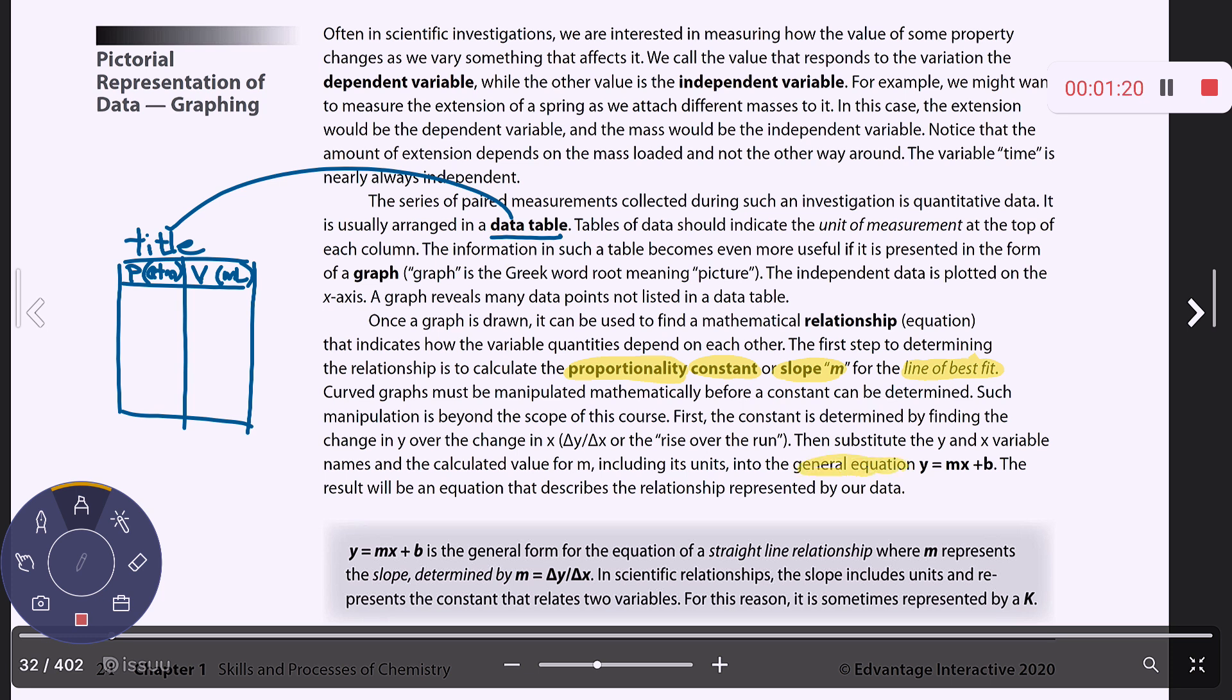You know that the general equation for the line of best fit is y equals mx plus b, m is the slope, b is the y-intercept. They will sometimes replace the letter for m, which is slope, with a k. So sometimes they will say that the constant that's relating the two variables that are involved is a k. That's just kind of something that we do in this class.